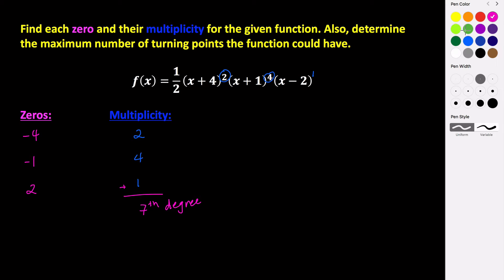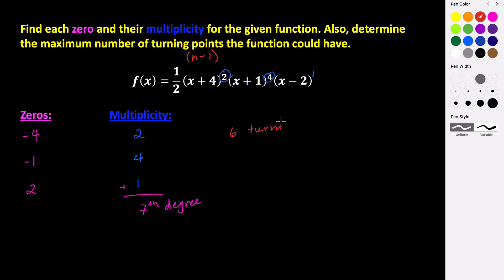Why is that important? It's going to help us determine the maximum number of turning points. To figure out the maximum number of turning points, it's just n minus one — the degree of our polynomial minus one. So this polynomial function has at most six turning points. It's not saying that it will have six, but that's the most that it could have.